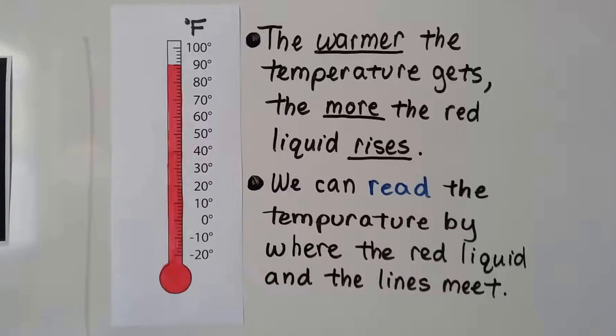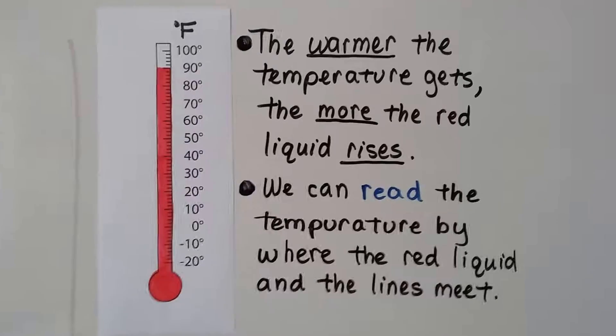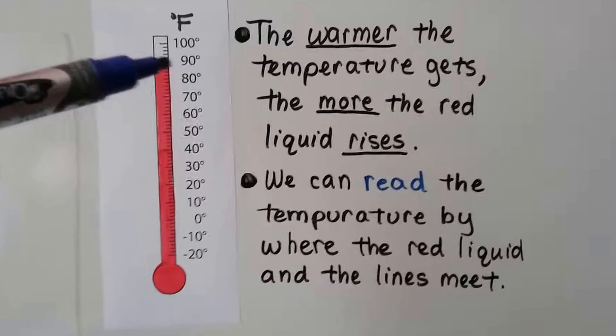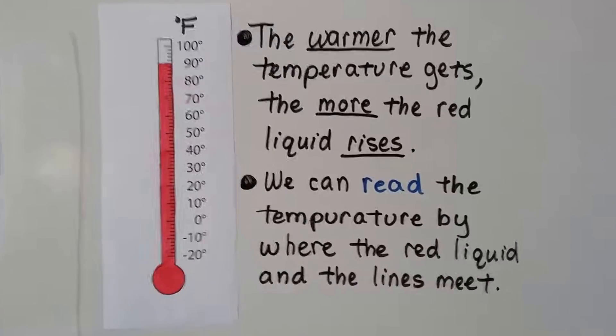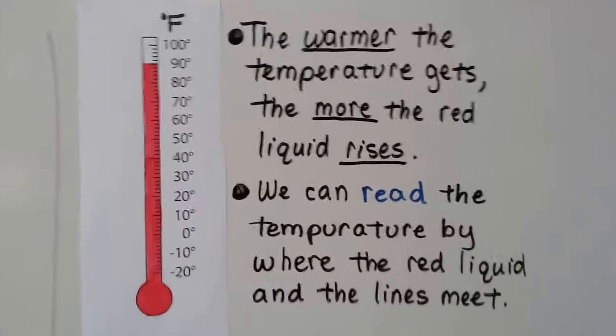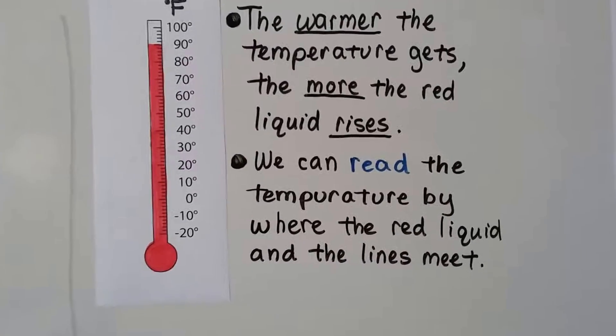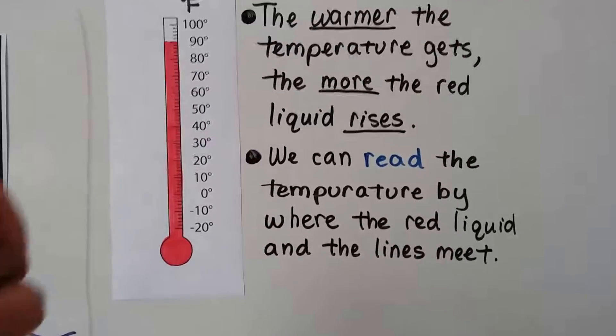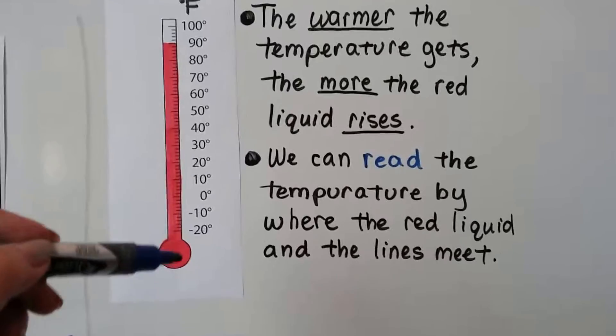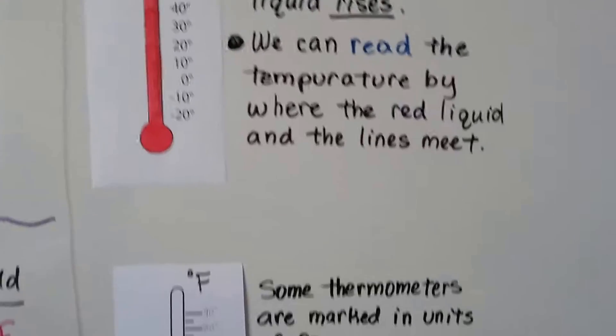The warmer the temperature gets, the more the red liquid rises. And we can read the temperature by where the red liquid meets the lines. See? The red liquid goes right up to the line where the 90 degrees Fahrenheit is, so you know it's 90 degrees. Now, the reason the red liquid is actually rising is because the molecules inside are heating up and making it expand. And because it's in a glass tube, the only way the liquid can expand is by going up. That's science. Let's stick to math, okay?